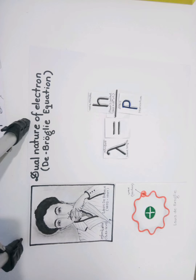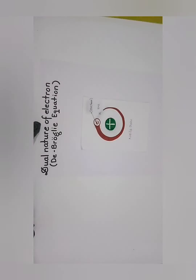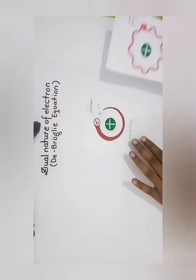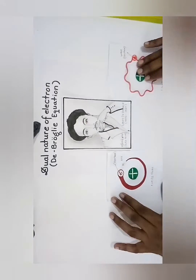Dual nature of electron — de Broglie equation. Niels Bohr in his theory assumed that an electron is a material particle revolving around the nucleus in a circular orbit. But in 1924, de Broglie pointed out that the electron, like light, behaves both as a material particle and as a wave — that is, the electron has a dual nature.